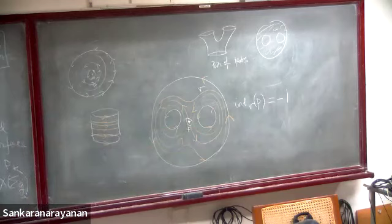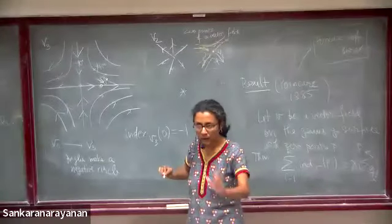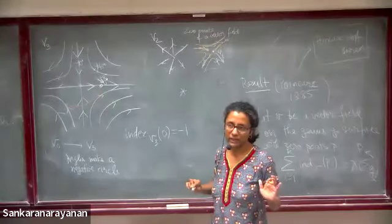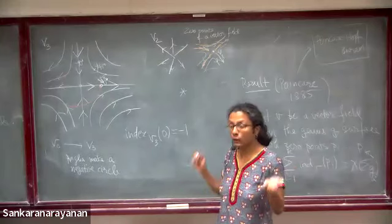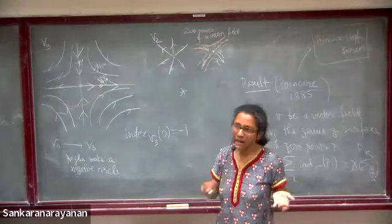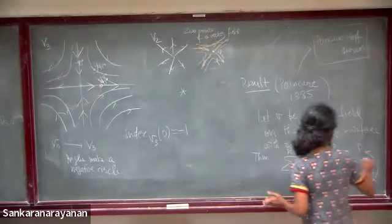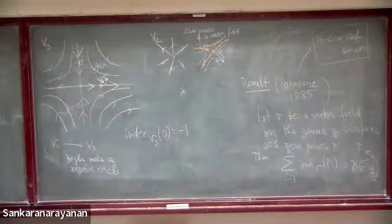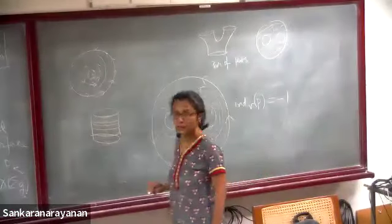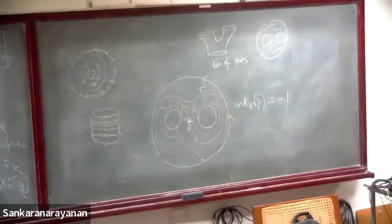So just one more thing: on a sphere you cannot have a vector field with no vanishing points — that's called the Hairy Ball theorem. You may have heard that name. On a torus, you can have a non-vanishing vector field, because you just connect the top and bottom. On other genus-g surfaces you will need to have these negative-index zero points. I'll stop here and take questions for a few minutes.